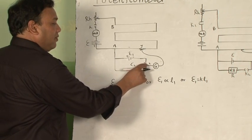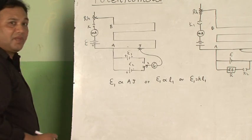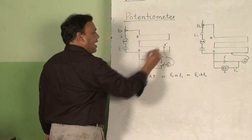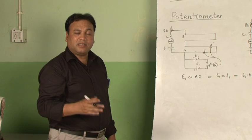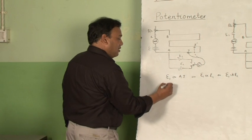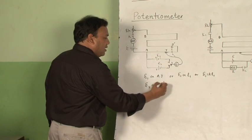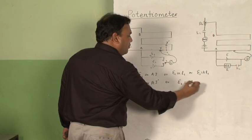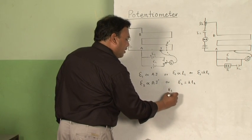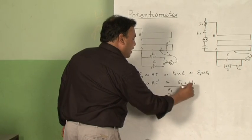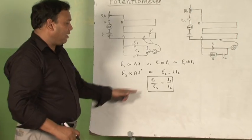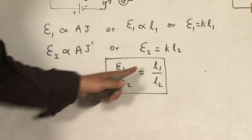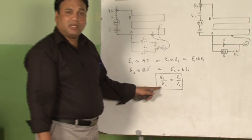Now open the gap 1-2 and close the gap for E2. Slide the jockey from A to B again — at another point J', the galvanometer current is zero. So E2 equals KL2. To compare the two EMFs, divide E1 by E2, which gives L1 upon L2. This equation is used to compare E1 and E2 by knowing the balancing lengths L1 and L2 obtained from the experiment.